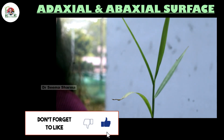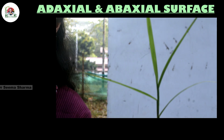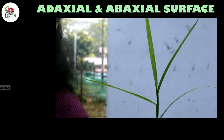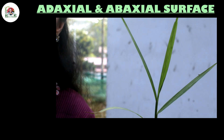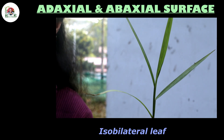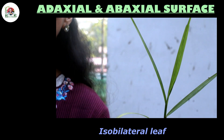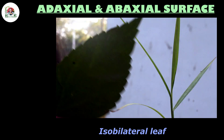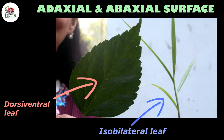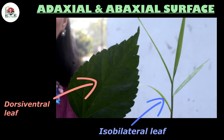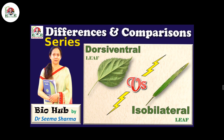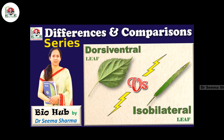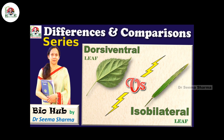This is a grass plant. You must observe that both the surfaces of these leaves are looking more or less similar and they can't be labeled as dorsal or ventral surface — such leaves are called isobilateral leaves. If you want to know about this kind of leaf and the basic differences between these two types of leaves, stay tuned for the next video, which is about the differences between dorsiventral and isobilateral leaves. Thanks for watching — stay tuned to BioHub, bye!